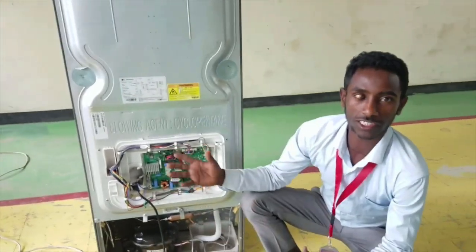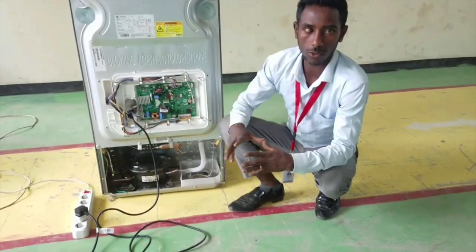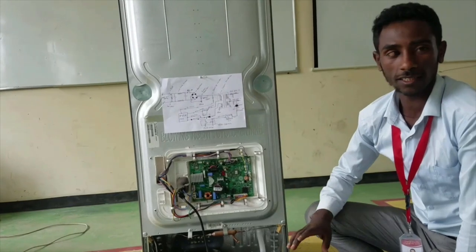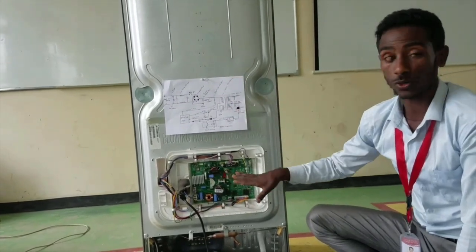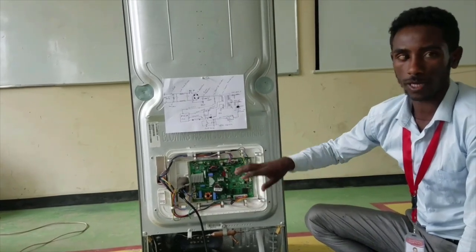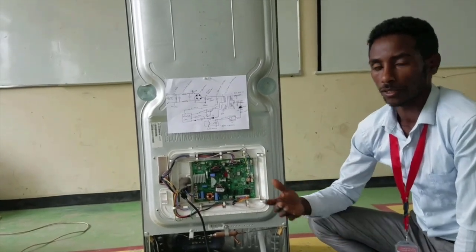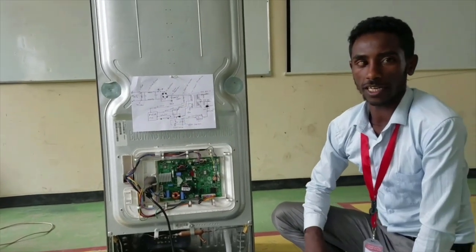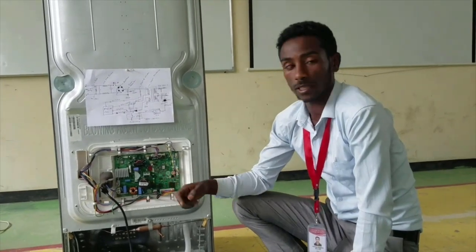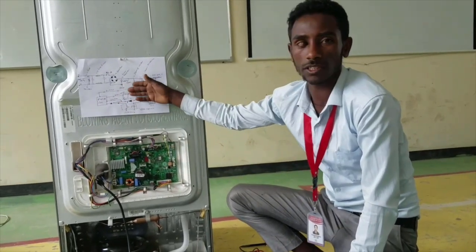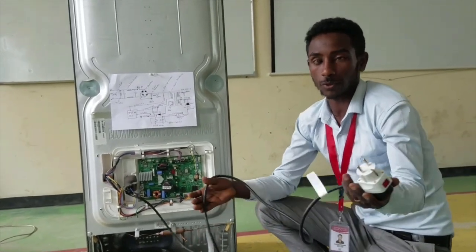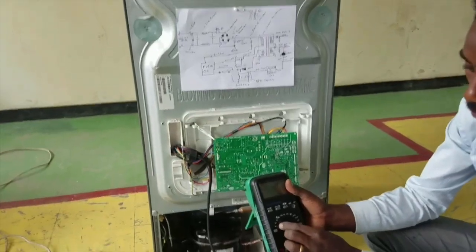Now we will see how to trace the power supply and the boards. We have to start from the power supply section — maybe the problem will be at the power supply. I have prepared the circuit diagram. This is the switch mode power supply diagram. We will start from the cable first; maybe the problem will be at the power cable.